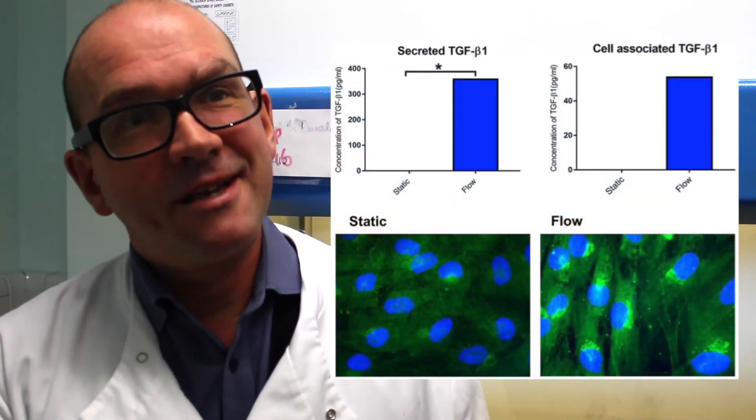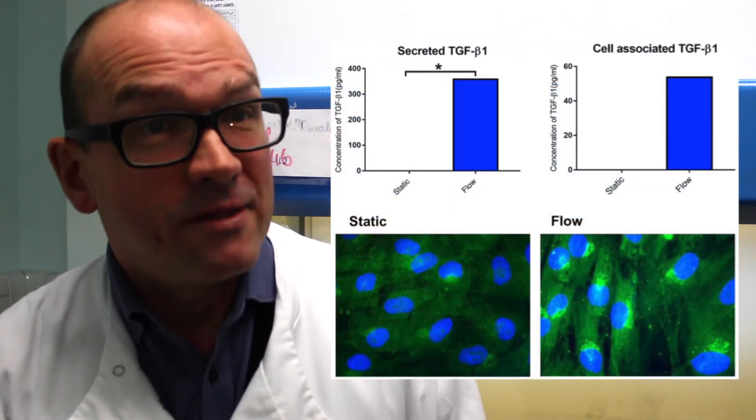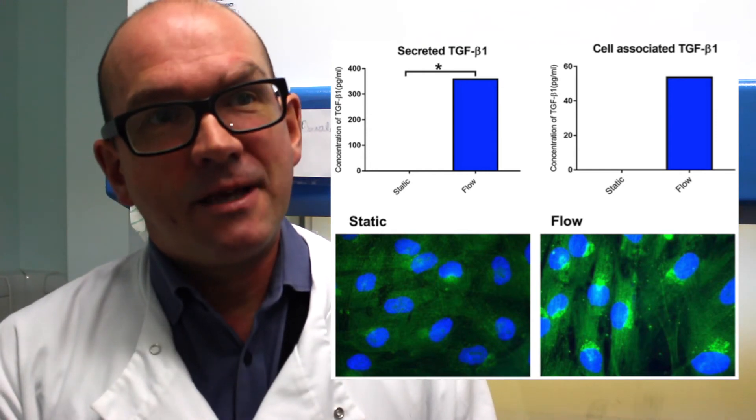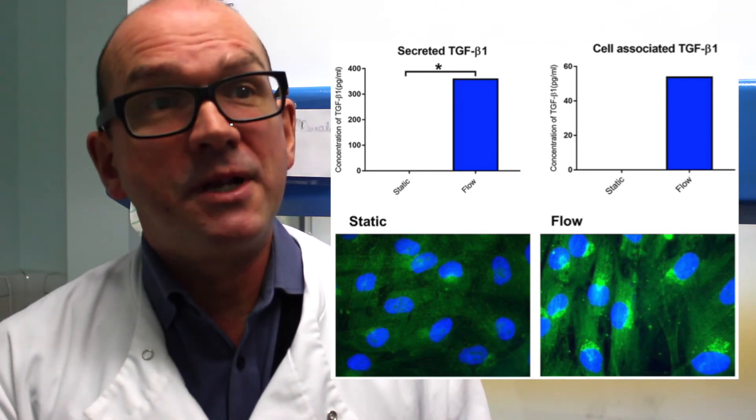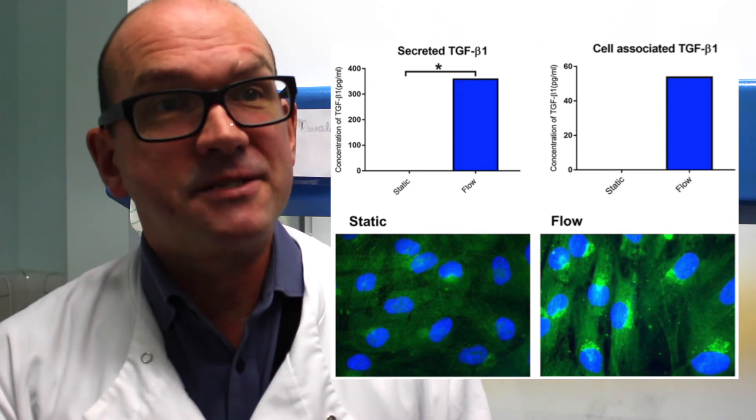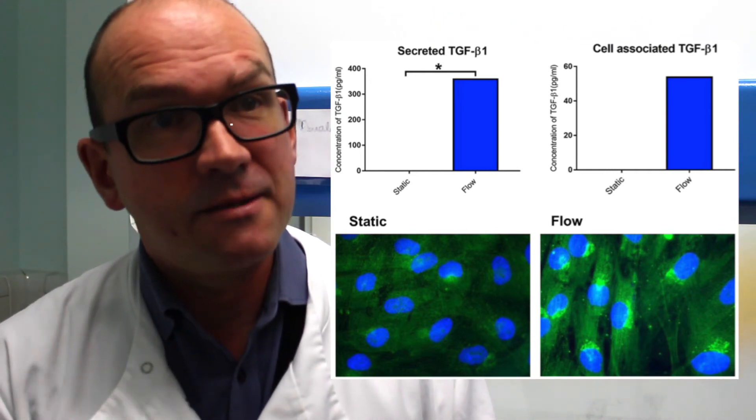The other possibility is that flow itself increases endogenous TGF-beta, so you're adding exogenous TGF-beta but the cells are also making more of it themselves. With some growth factors you get what's called a pleiotropic effect, a different effect depending what dose you're using. So it may be that the enhanced levels of TGF-beta give you a different response, give you a down-regulation.